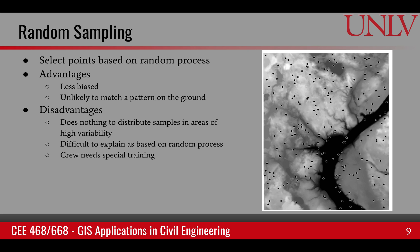The other type is random sampling. In this case, we are not following any pattern — locations are generated on a random basis. Maybe you're walking and flipping a coin, and if it lands heads, that's when you take the sample. The advantage is that it removes bias of any sort and it's unlikely you'll end up following any pattern on the ground. But it does not distribute points based on inherent variability on the surface, so some points may not get chosen, and it can be difficult to explain the random process to a crew since it is not based on any physical information.